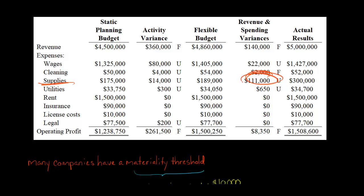Supplies is clearly the largest cost variance. The manager could also see that wages is a large unfavorable variance — $22,000 more than it was supposed to be. Per the flexible budget it was supposed to be $1.405 million, but ended up being $1.427 million. So if they said they'd investigate every cost variance above $10,000, they would look into wages and supplies. This saves the manager time — they're not going through cleaning expense or utilities. They just focus on the problem areas, the exceptions from what was expected.